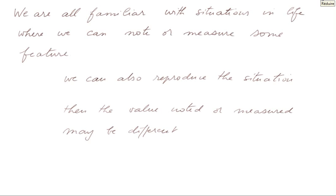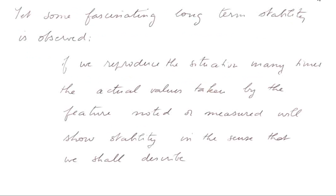Random experiment. We are all familiar with situations in life where we can note or measure some feature. We can also reproduce the situation, then the value noted or measured may be different. Yet some fascinating long-term stability is observed. If we reproduce the situation many times, the actual values taken by the feature noted or measured will show stability in the sense that we shall describe.